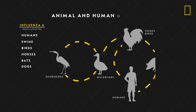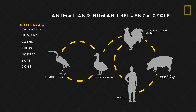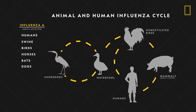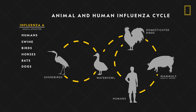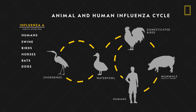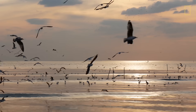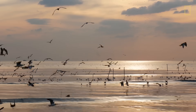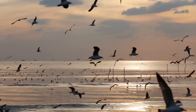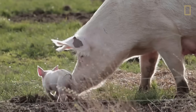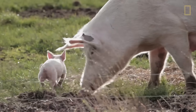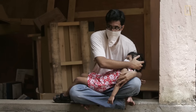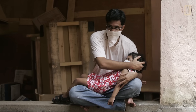Influenza A viruses mutate more rapidly, allowing them to adapt to new hosts and even cross species. Avian flu and swine flu, for instance, are two strains of type A viruses that, through mutations, can be transmitted from birds and pigs to humans.